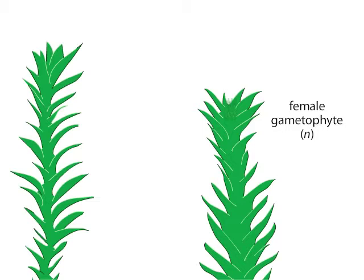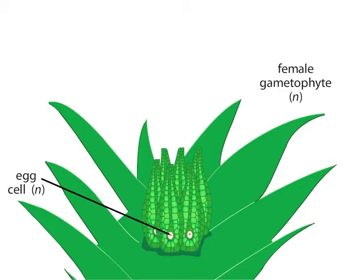The female gametophyte produces a female gamete, or egg, inside each of many female reproductive structures called archegonia. Like the sperm, the eggs are haploid and are produced by mitosis.